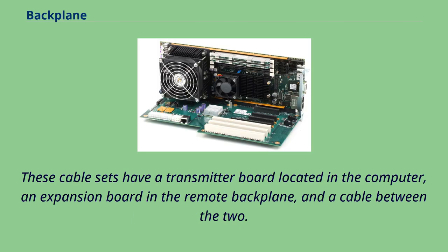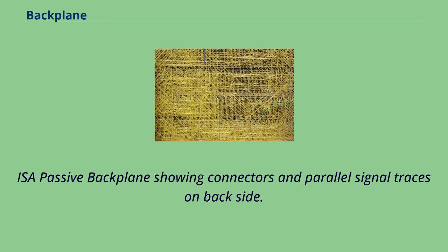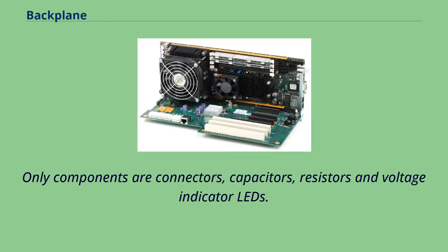These cable sets have a transmitter board located in the computer, an expansion board in the remote backplane, and a cable between the two. An ESA passive backplane showing connectors and parallel signal traces on the back side has only components such as connectors, capacitors, resistors, and voltage indicator LEDs.